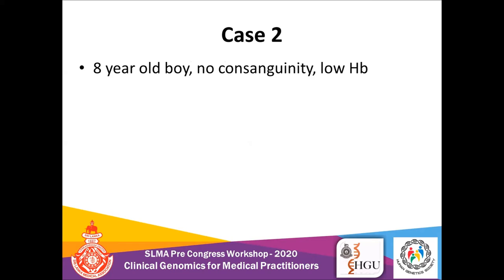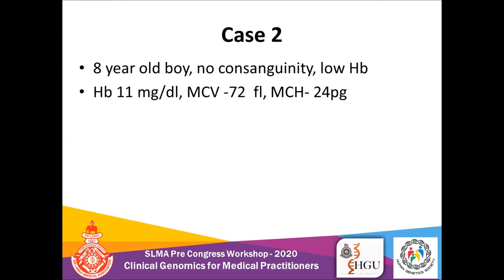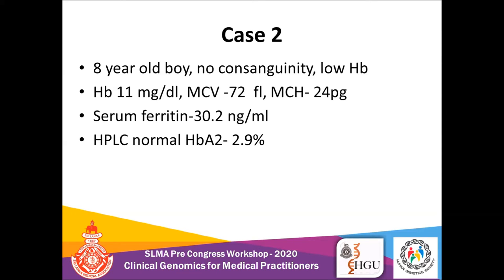The second case is a young boy born to a non-consanguineous family, incidentally found to have low haemoglobin. Haemoglobin was marginally low with hypochromic microcytic anaemia, and serum ferritin was also within normal range. Interestingly, the HPLC haemoglobin quantification was normal — this is how alpha thalassemia trait usually presents. Gap PCR studies for common alpha thalassemia mutations revealed he is homozygous for the alpha 3.7 deletion, which is the commonest deletional mutation in Sri Lanka causing alpha thalassemia.